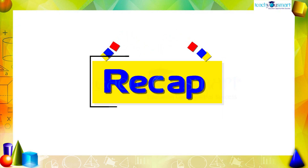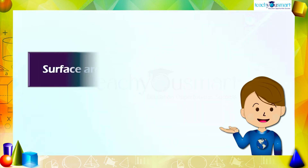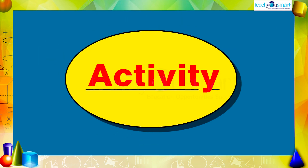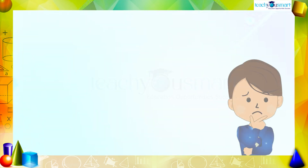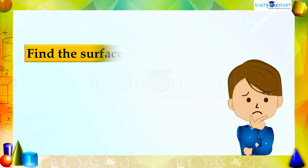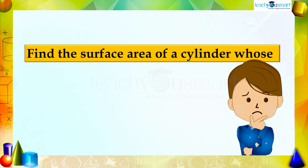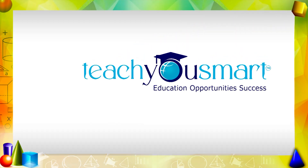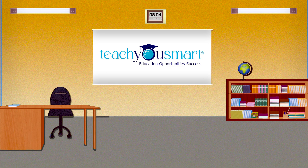Today we discussed the surface area of the cylinder. Before winding up, let's check how much you understood by doing an activity. Find the surface area of a cylinder whose height is 10 centimeters and radius is 4 centimeters. That's all for now — see you all in the next class.